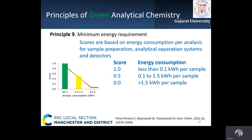The ninth principle emphasizes minimum use of energy for any analysis. Scores are assigned based on energy consumption per analysis for sample preparation, analytical separation systems, and detection systems, expressed in kilowatt-hours per sample. A score of 1 is assigned to energy consumption less than 0.1 kilowatt-hours per sample.